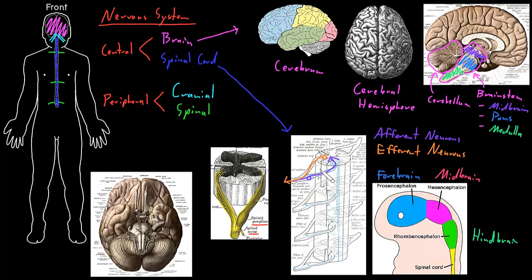The spinal nerves form from two parts called spinal nerve roots — a root in the front and a root in the back. The afferent neurons bringing information into the central nervous system travel through the spinal nerve roots in the back, while the efferent neurons carrying information away from the CNS travel in the roots in the front. Then they come together in the spinal nerves, which we call mixed nerves because they carry a mix of afferent and efferent neurons.